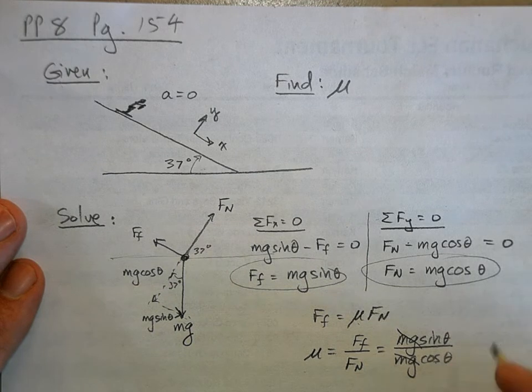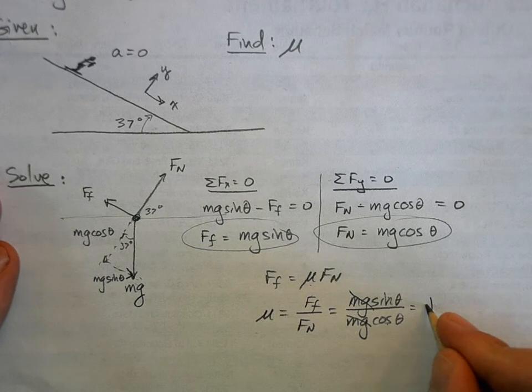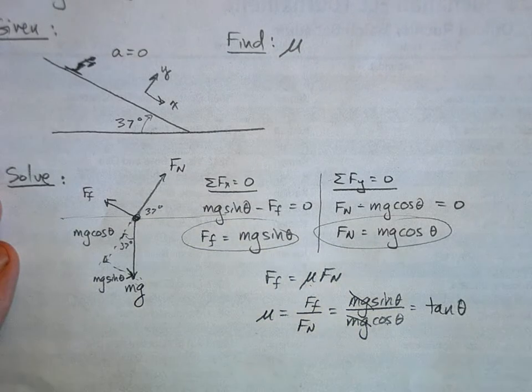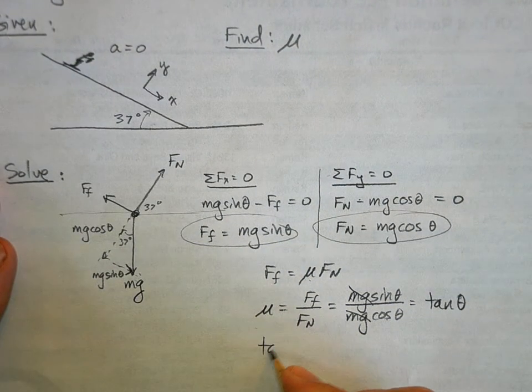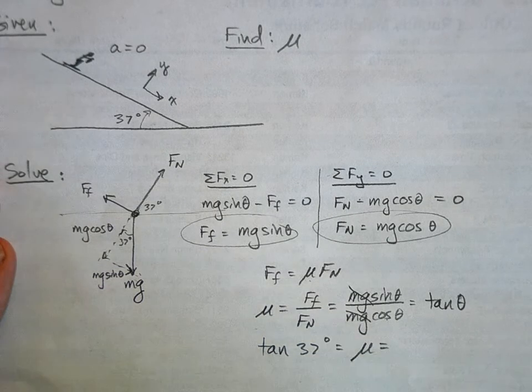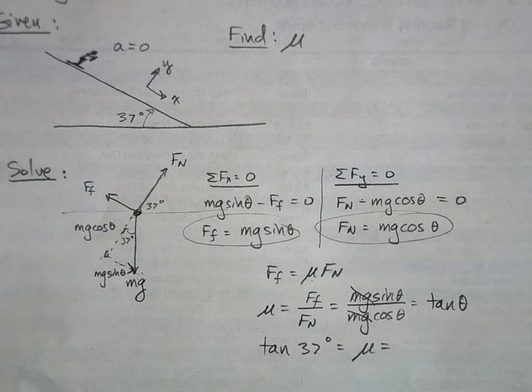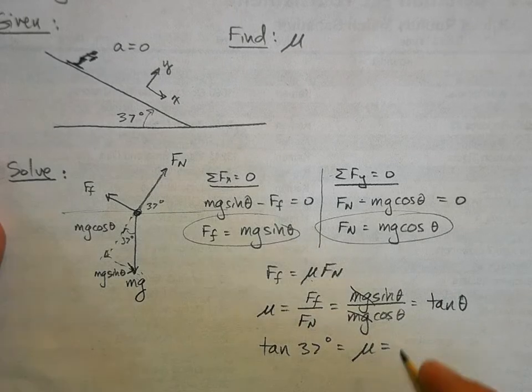Sine over cosine is tangent, so this is just going to be equal to the tangent of the angle. And so the tangent of 37 degrees is equal to mu. And the tangent of 37 degrees, I believe you punch that into a calculator and what do you get? 0.75.